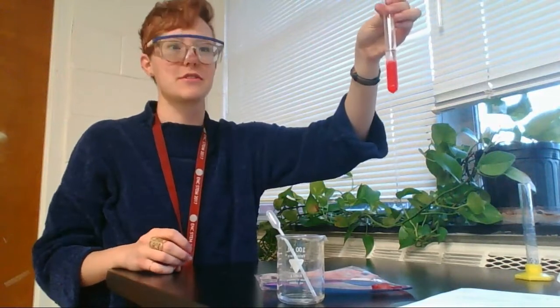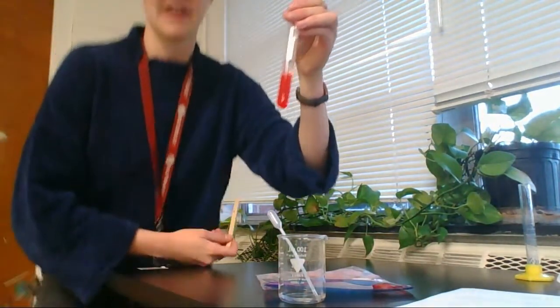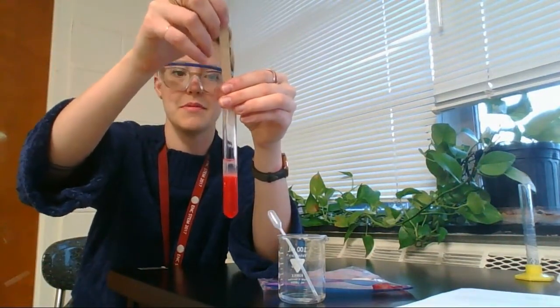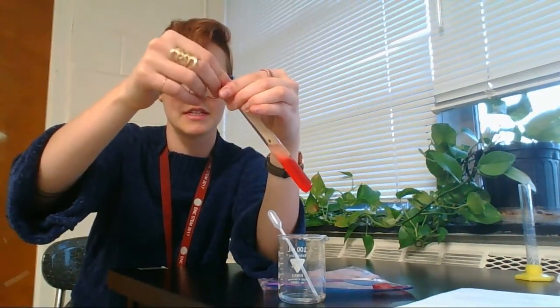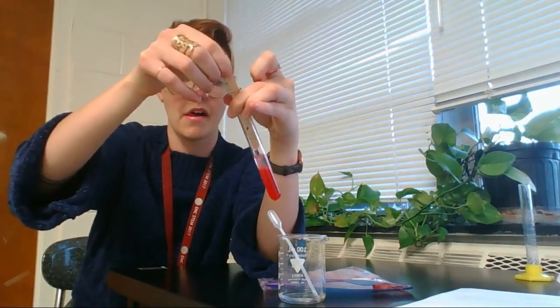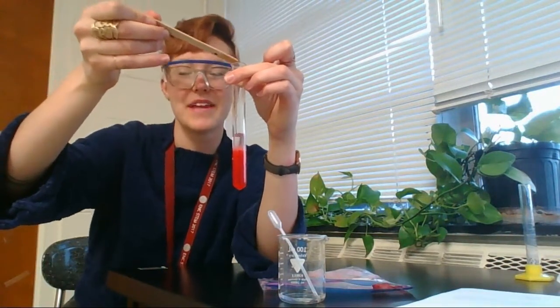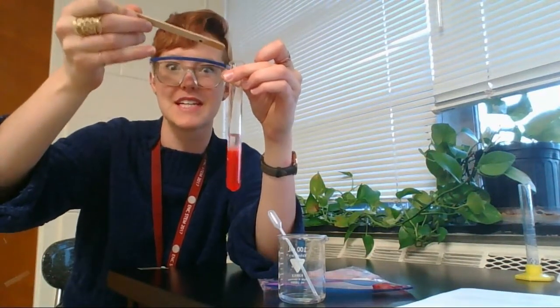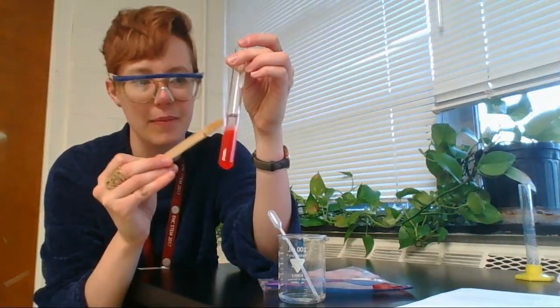I forgot to get my popsicle stick, let me get my popsicle stick. What I'm going to do is I'm going to take my popsicle stick, put it in my test tube, and I'm going to pull out some of my DNA. You might kind of have to twist it to the side. And you can get some of the snot. It looks like snot, but that's actually strawberry DNA. We crushed up the millions of cells inside that one strawberry, and this is all of the DNA from that strawberry.